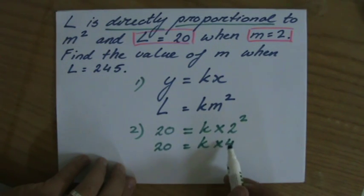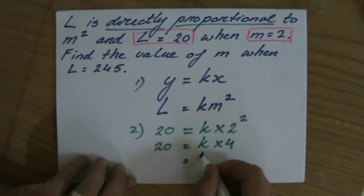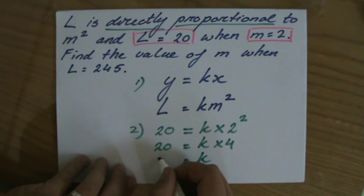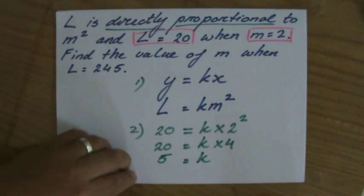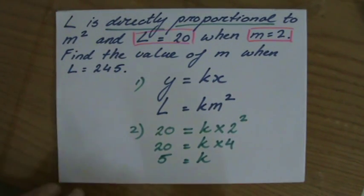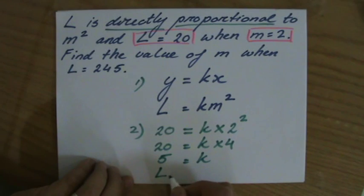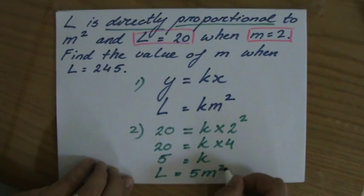And if we divide both sides by 4 to get rid of that, to isolate k, then you'll get that k is 5. So the equation for this particular situation is L equals 5m squared.